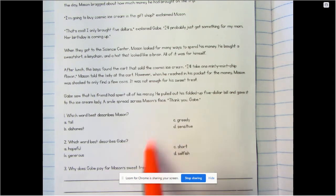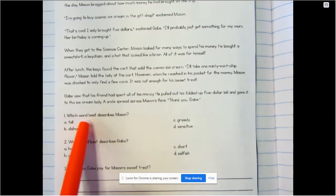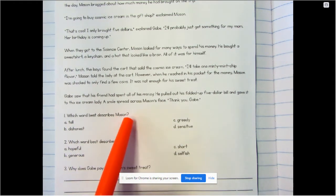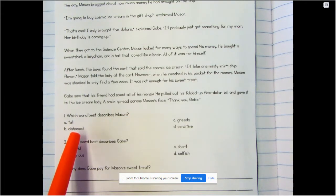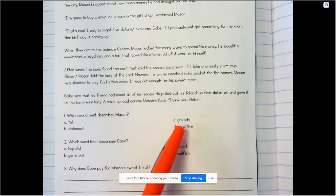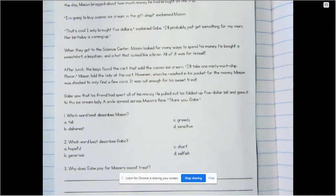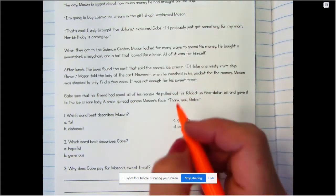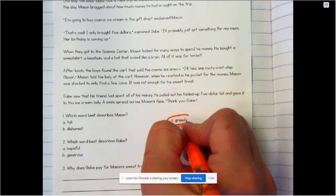So let's look at number one: which word best describes Mason? Is he tall, is he dishonest, is he greedy, or is he sensitive? What do you think? Mason is the one that brought all the money and he was going to buy all kinds of stuff for himself and the cosmic ice cream. And Gabe was the boy that was taller and he was just going to buy something for his mom with his five dollars. So Mason was kind of being a little greedy, wasn't he, because he wanted everything.